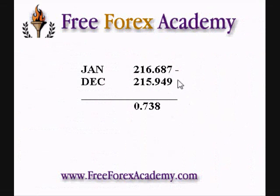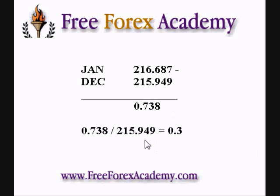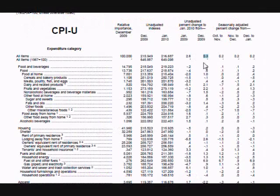They take the difference between those two numbers, which is 0.738, and then divide it by the previous month's index number. So it's 0.738 divided by 215.949 for a change of 0.3 unadjusted — here's the number right here, 0.3 unadjusted.